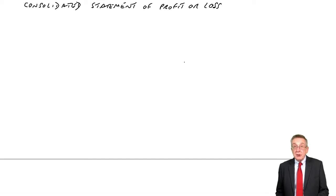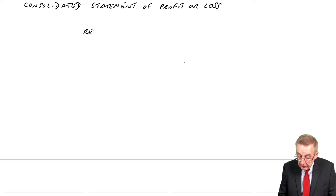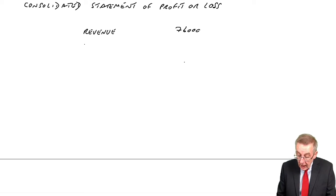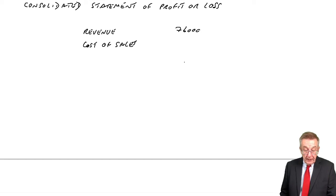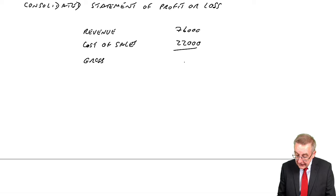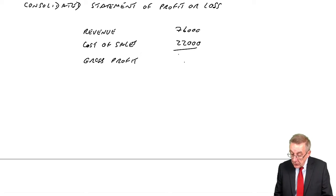Let's have a go. Let's do the consolidated statement of profit or loss. Essentially, we just add up. The total revenue for the group: 52 in one, 24 in the other, a total of 76,000. And the total cost of sales — add up — 12 plus 10 is 22,000. And so the gross profit: 76 minus 22,000 is 54,000.